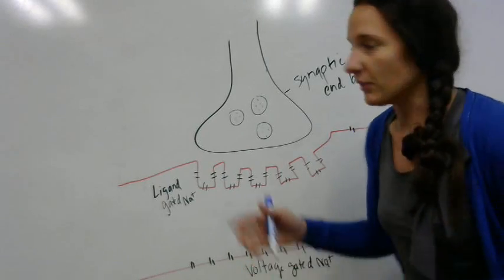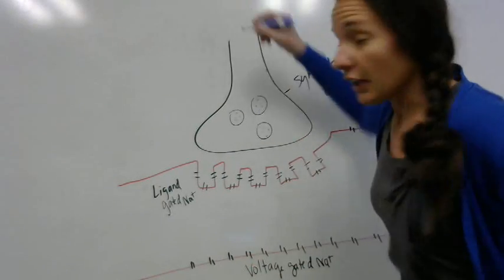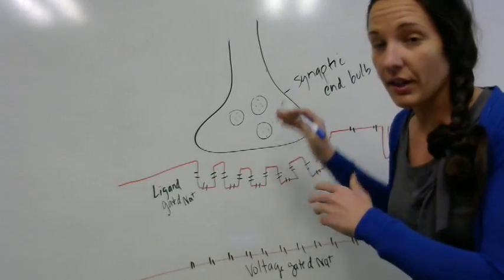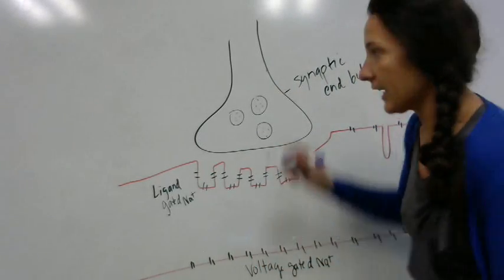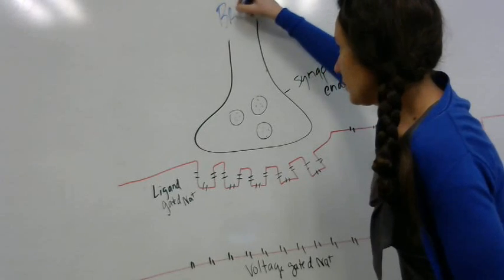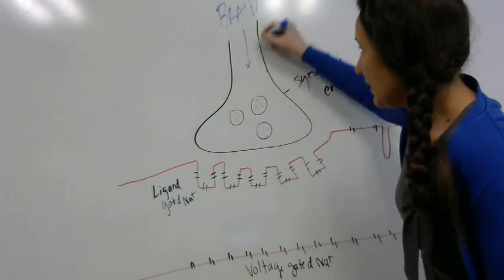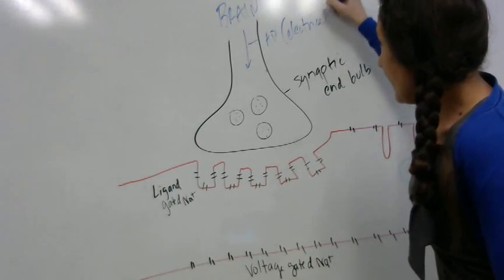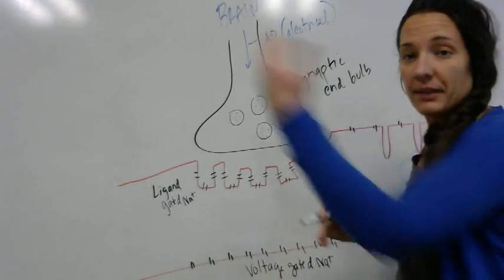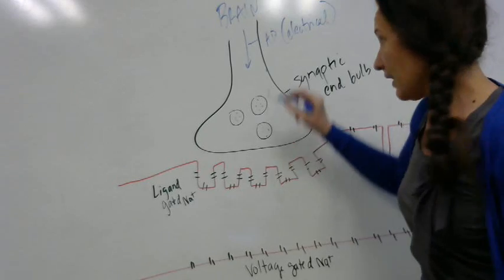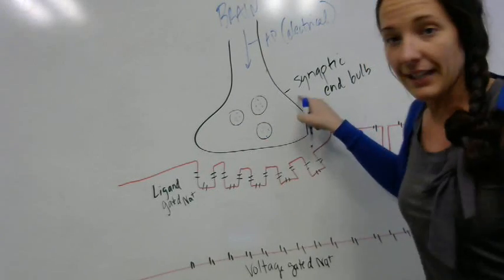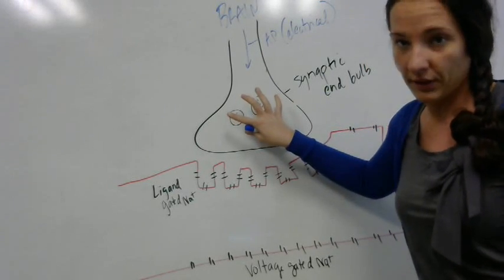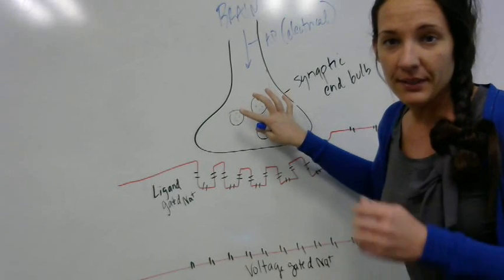We start with the neuron itself. Don't forget that we have this neuron being controlled by the brain. This is voluntary action, so the brain sends these action potentials, which is electrical energy, and that electrical energy is being sent down the actual neuron itself. This is the synaptic end bulb, and this whole structure that you see right here is a synaptic end bulb.